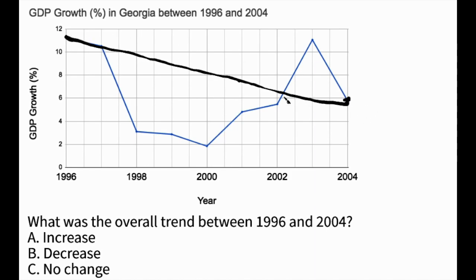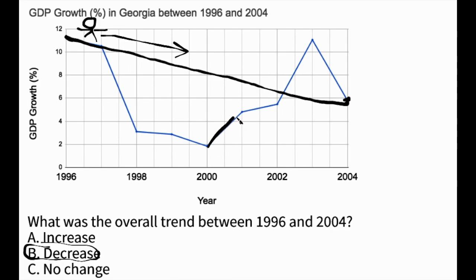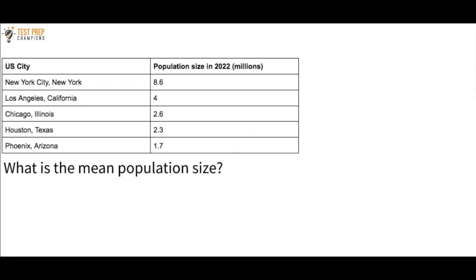The next question asks for the median population size. The median is the middle number when the numbers are ordered from smallest to largest. Many people remember the median is the middle number, but you must put them in order first. Our list ordered from smallest to largest is: 1.7, 2.3, 2.6, 4, and 8.6. Since we have five numbers (an odd count), we simply look at the middle number, which is 2.6. Make sure you always put numbers in order from smallest to largest first before finding the middle number.